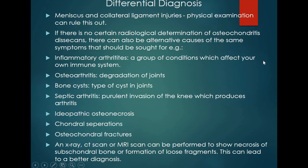Differential diagnosis includes many conditions to rule out, such as meniscus and collateral ligament injuries (assessed by physical examination and tests), inflammatory arthritis, bone cysts, osteoarthritis, septic arthritis, idiopathic osteonecrosis, chondral separations, and osteochondral fractures.